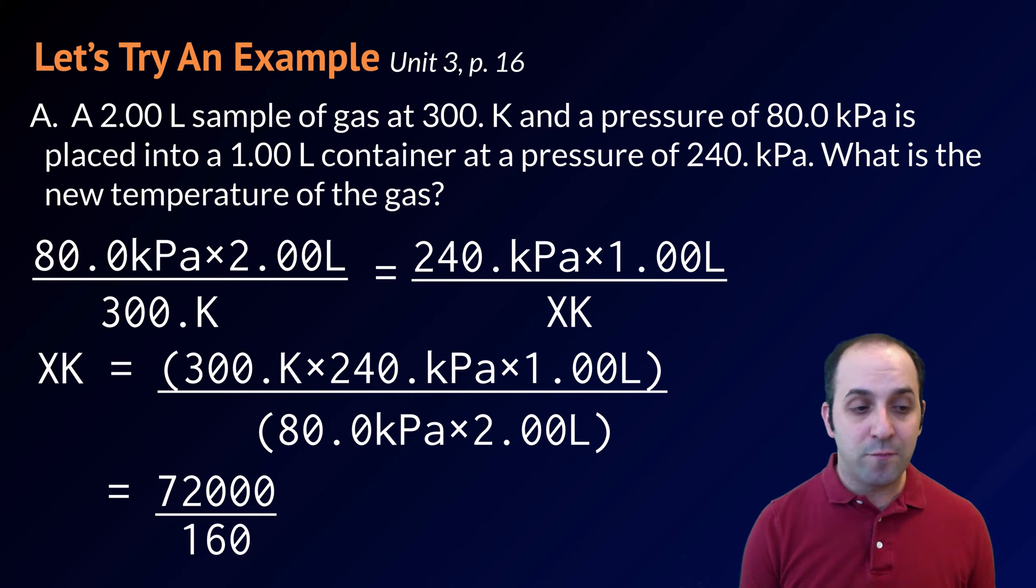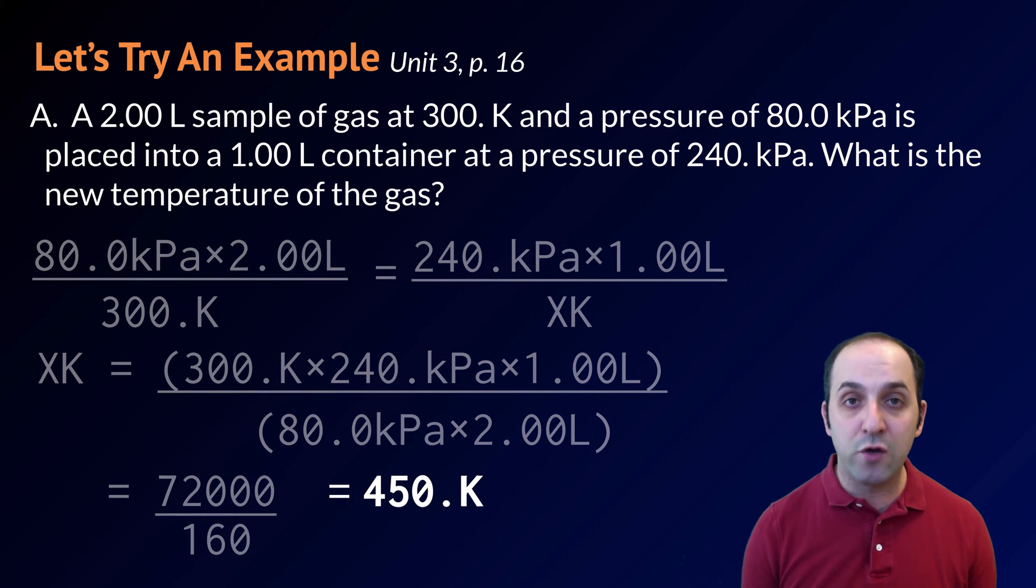Let's do these mathematical operations to understand that our final temperature is going to be equal to 72,000 divided by 160. And so when we do that math, we get a final temperature of 450 degrees Kelvin.